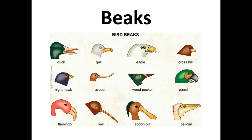Let's look at these beaks and I'm going to have you count how many beaks, or how many of these birds you've actually seen in real life. You can pause the video if you want — that'll give you a little bit more time to look at them. I myself have only seen seven in real life, and one of them, the flamingo, I've only seen in a zoo. But I've seen the duck, the gull, eagle, a woodpecker, a parrot, flamingo, and a pelican. We actually have pelicans here in Minnesota — a lot of people don't know that.